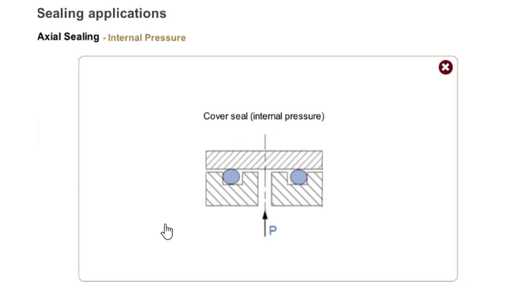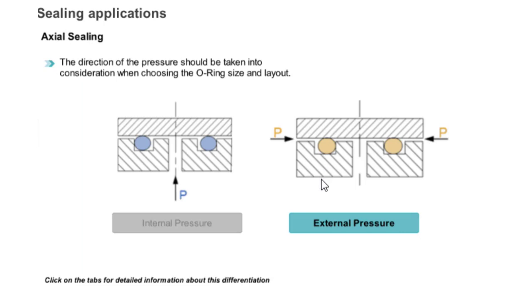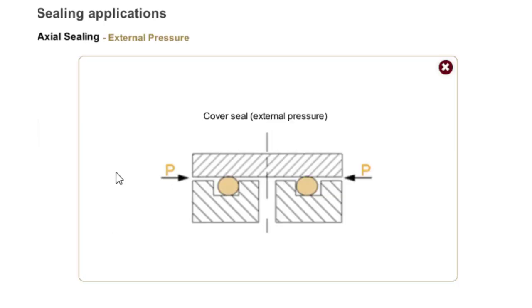In this example, the O-ring works as an axial seal with internal pressure. In this application, the O-ring works as an axial seal with external pressure.